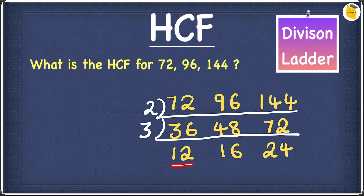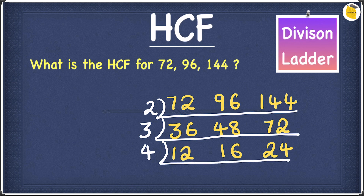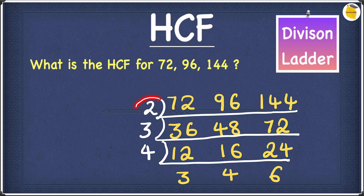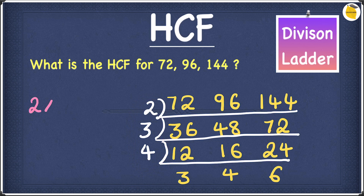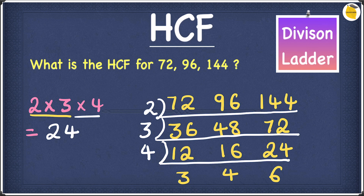Can we find a common factor between 12, 16, and 24? Yes — the common factor is 4: 4 goes into 12 three times, into 16 four times, and into 24 six times. We can't find a common factor between 3, 4, and 6 anymore, so we stop here and multiply 2, 3, and 4 to get the HCF. 2 times 3 is 6, and 6 times 4 is 24. So our answer is 24.